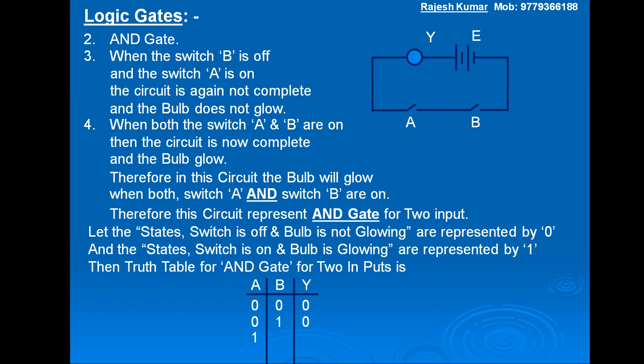Third case: A is 1 and B is 0 — switch A is on and switch B is off — output Y is again 0, the bulb does not glow. Fourth case: A is 1 and B is 1, both switches are on, then the bulb glows and output Y is also 1. So this is the truth table for the AND gate for two inputs.